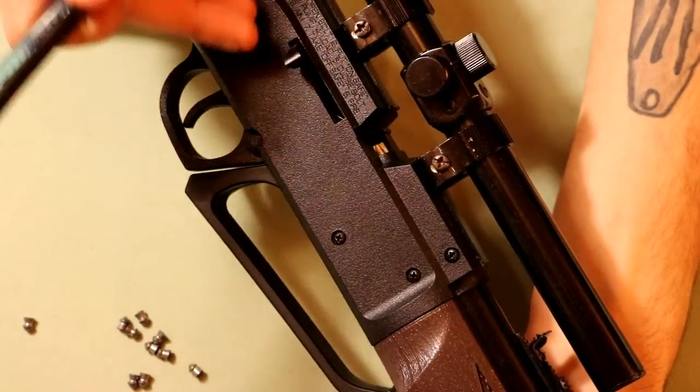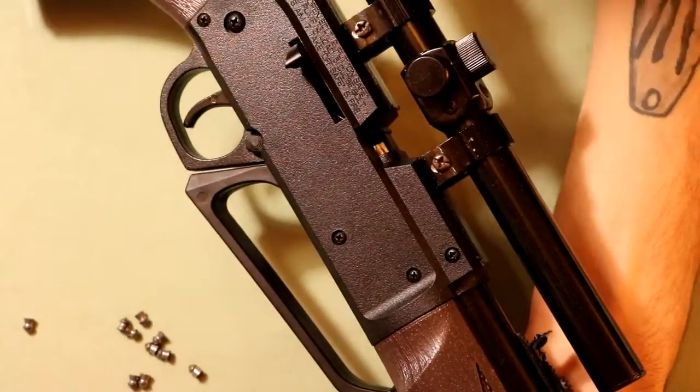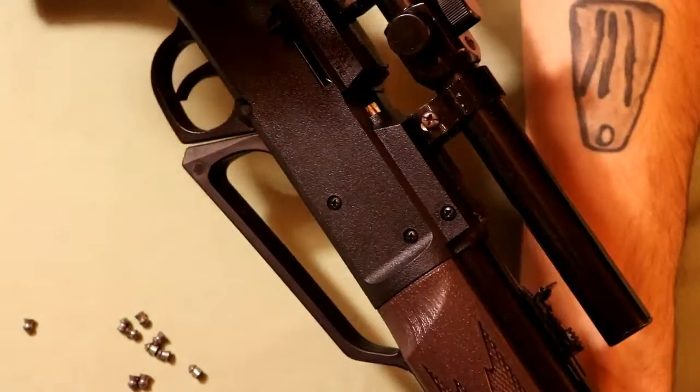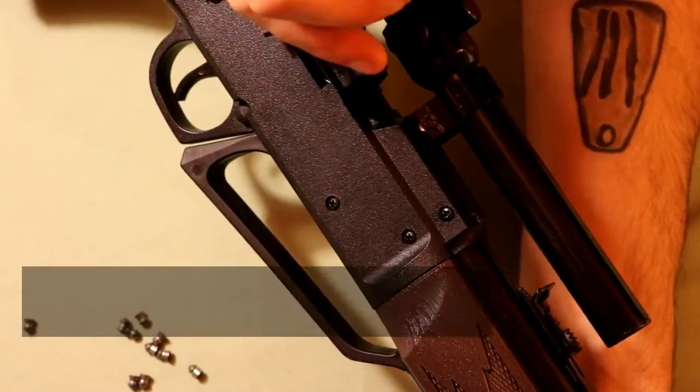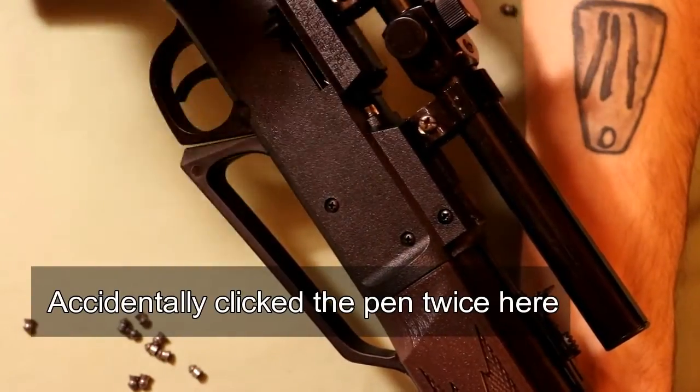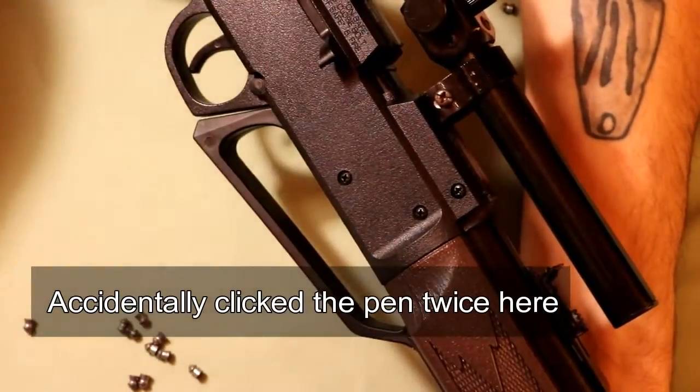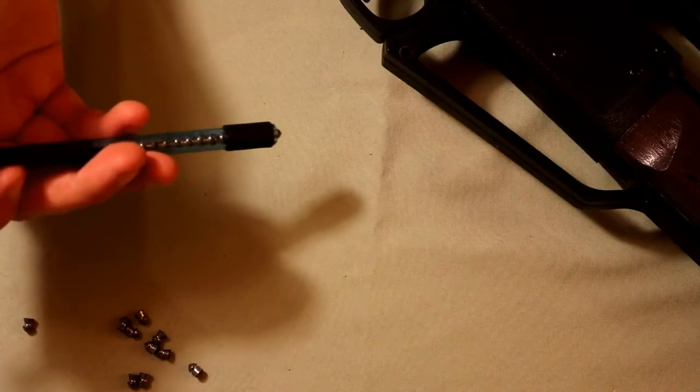The same process can also be done on some breech loading pellet guns. I say some just because I don't know if it'll work for every single one, but on this Daisy 80 rifle that I have, you can just insert it at an angle and pop one in. It's headed in the right direction and you just have to close the breech and you're ready to go.